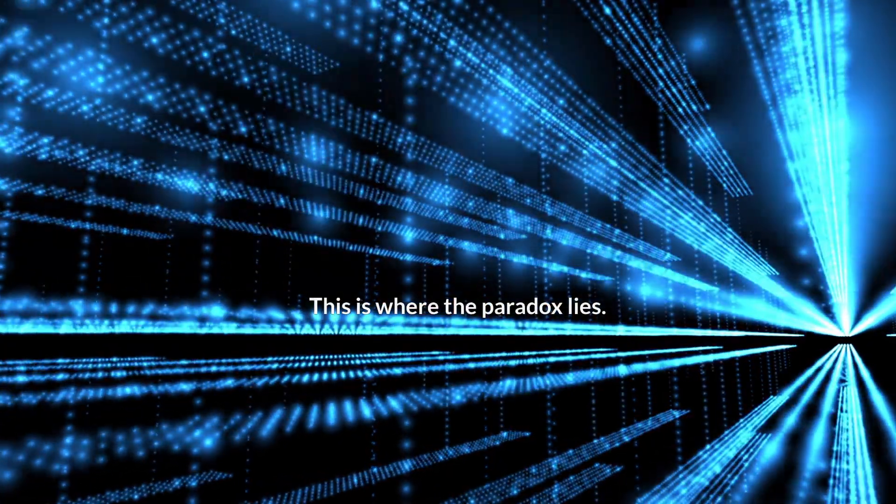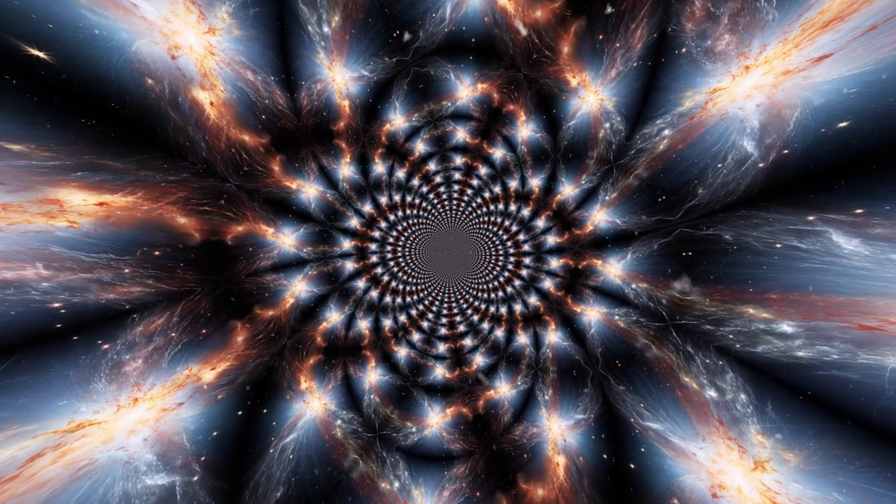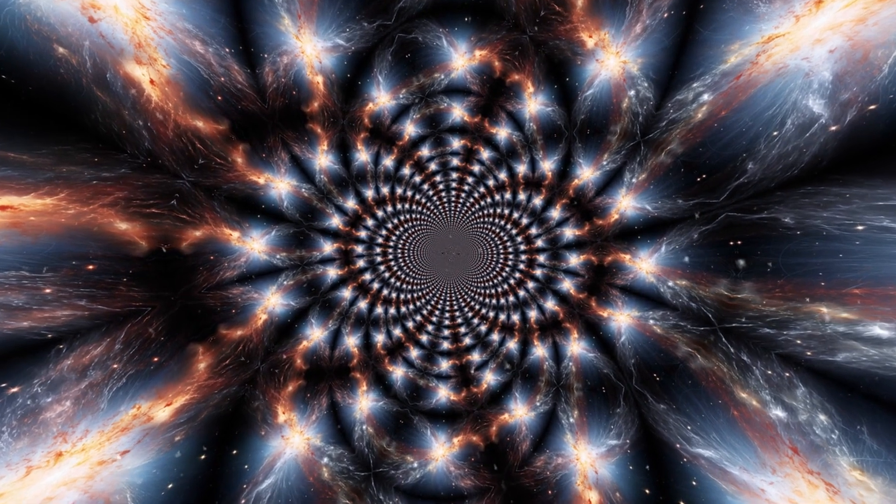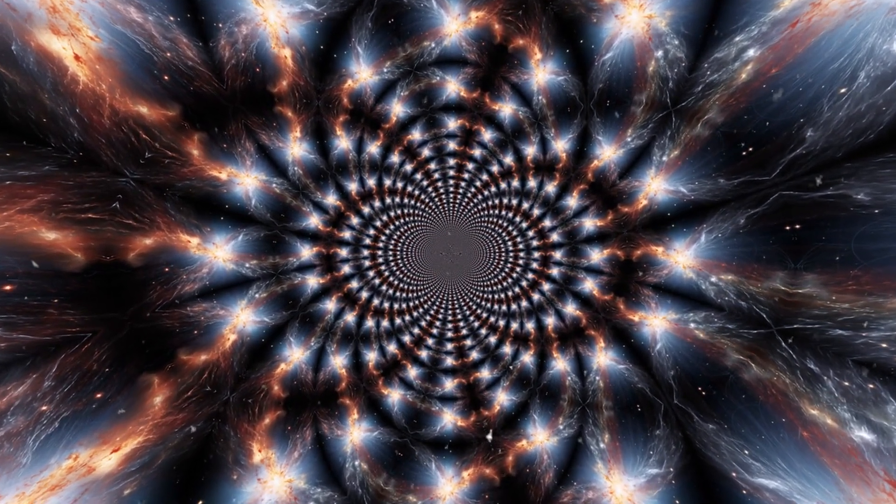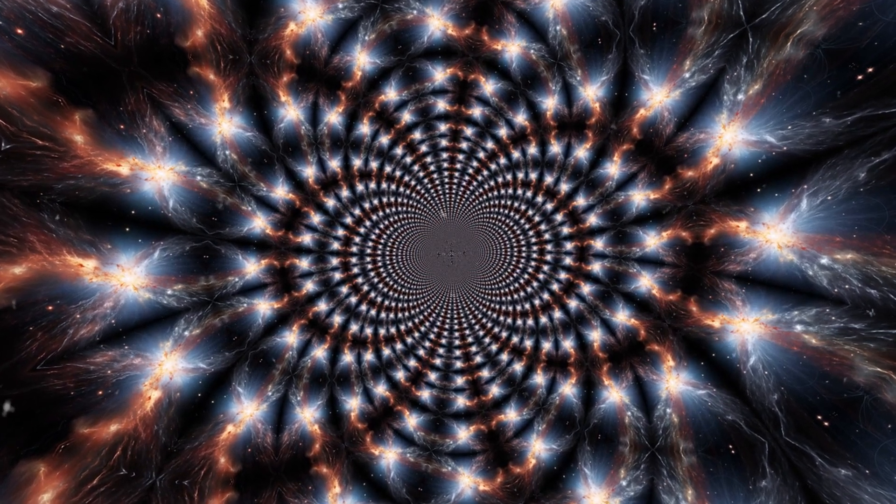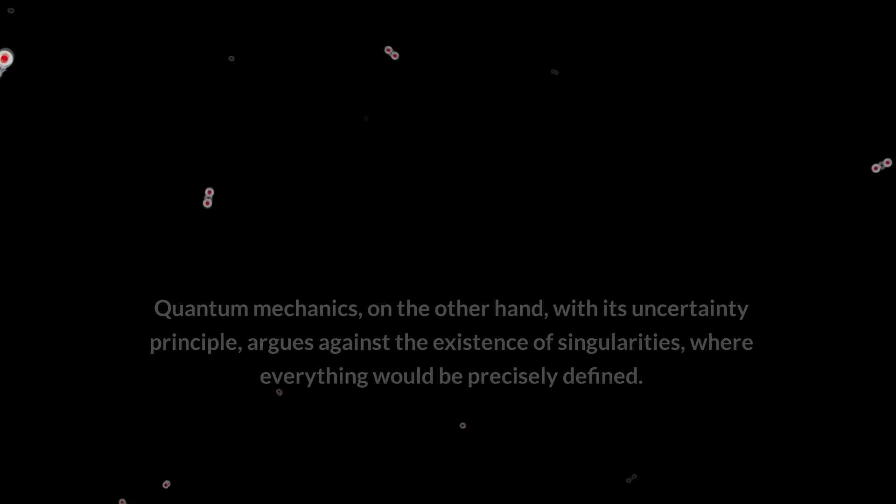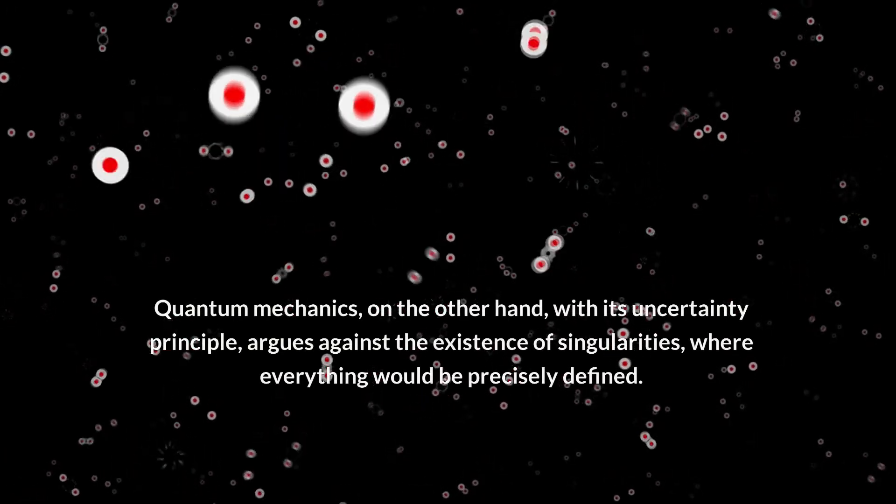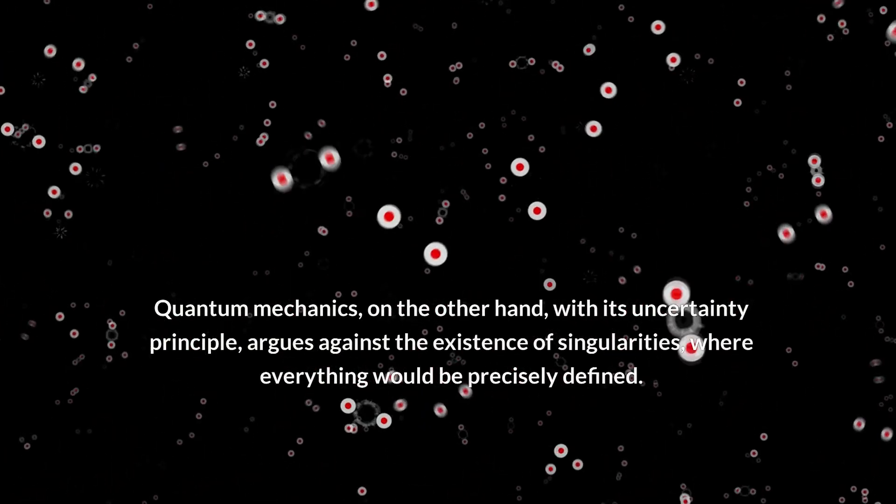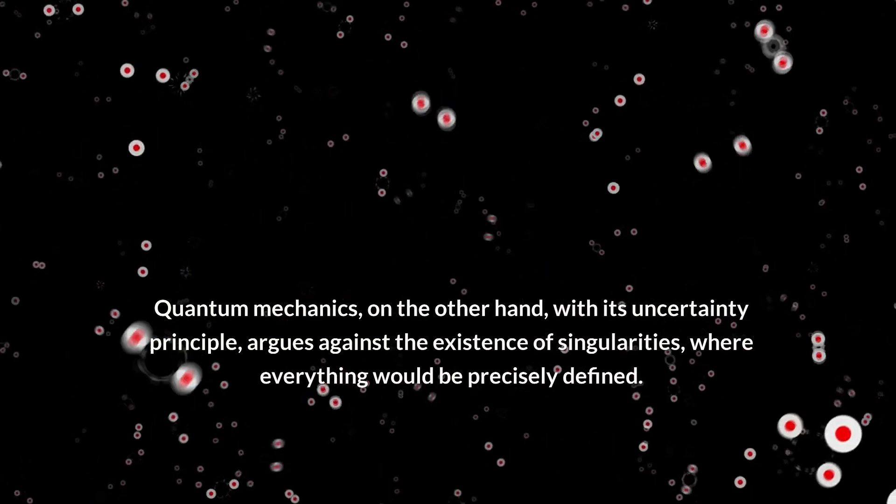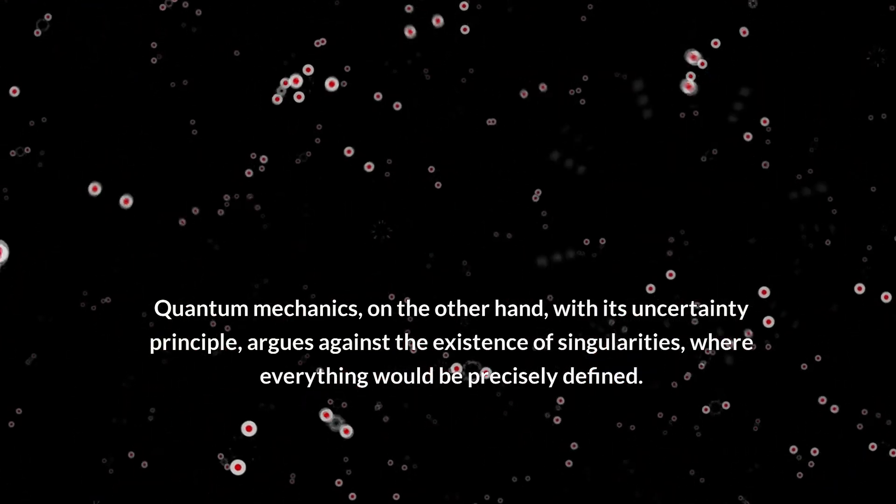This is where the paradox lies. Our best theories of physics, general relativity and quantum mechanics, which have been tested and proven accurate in countless experiments, fail to describe what happens at a singularity. General relativity predicts them but cannot explain what happens within them. Quantum mechanics, on the other hand, with its uncertainty principle, argues against the existence of singularities where everything would be precisely defined.